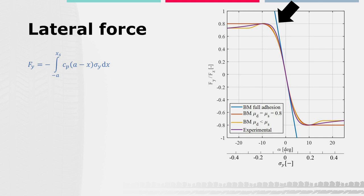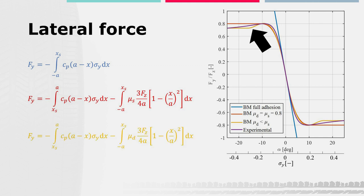In blue, no friction limit. In red, static and dynamic friction are equal. In yellow, dynamic friction coefficient is smaller than the static one.